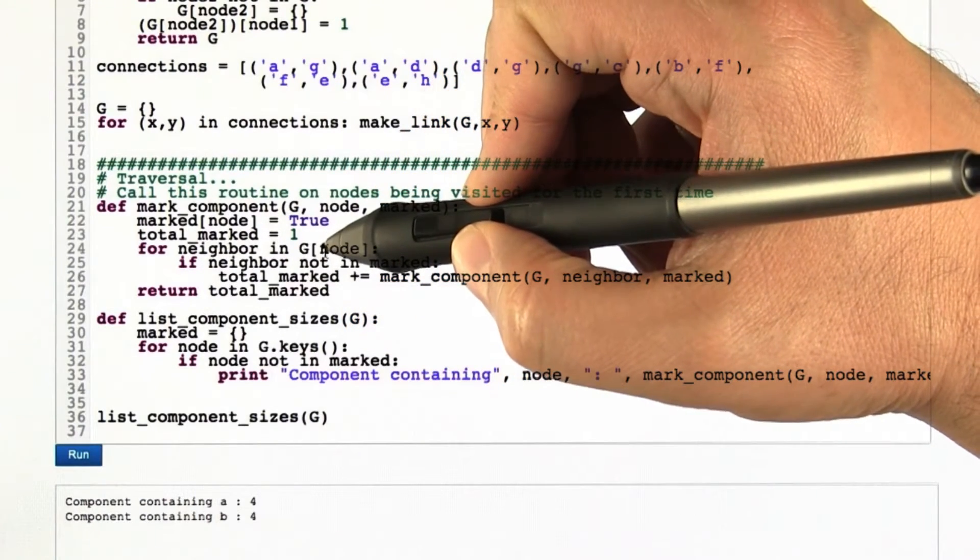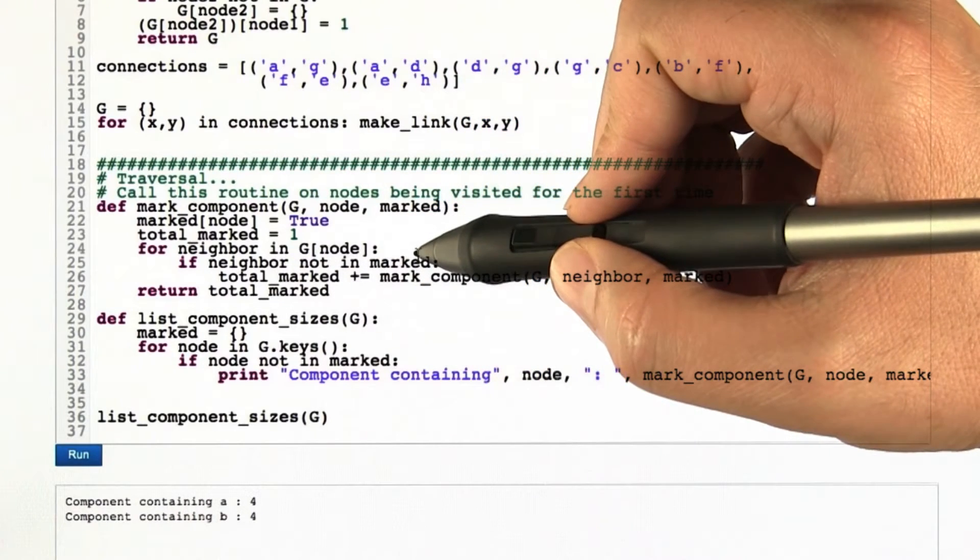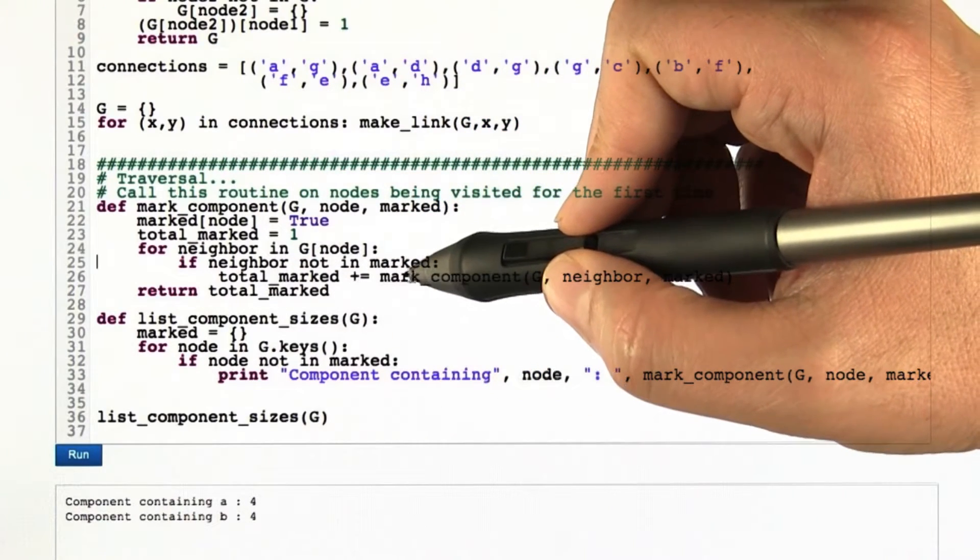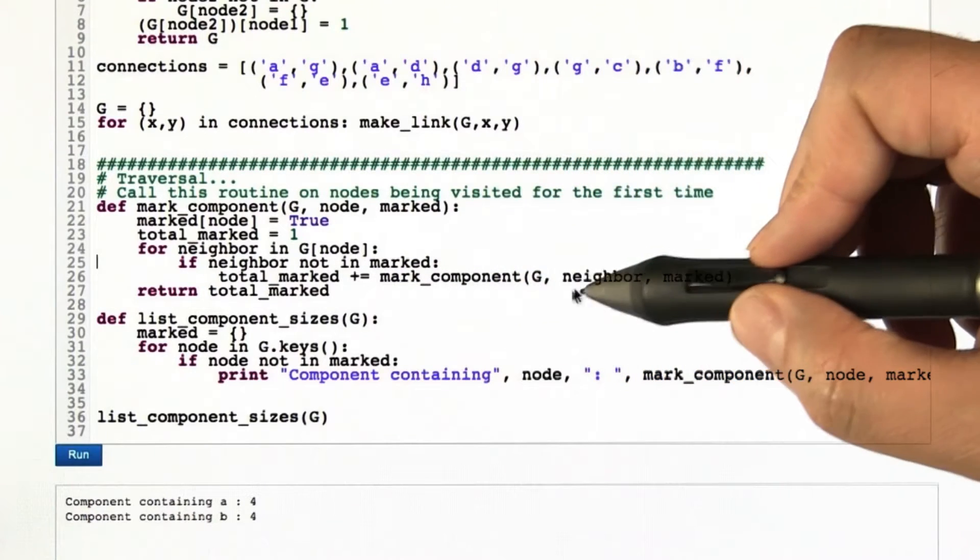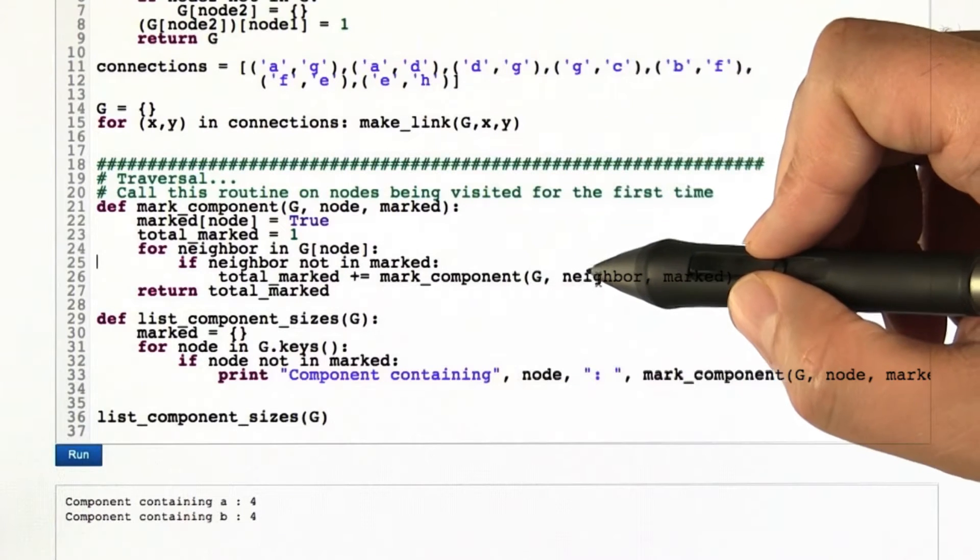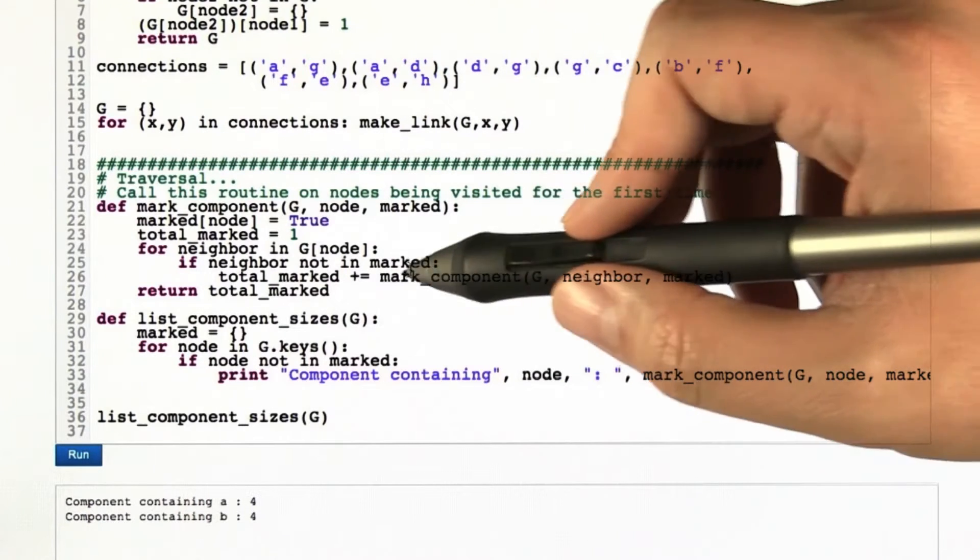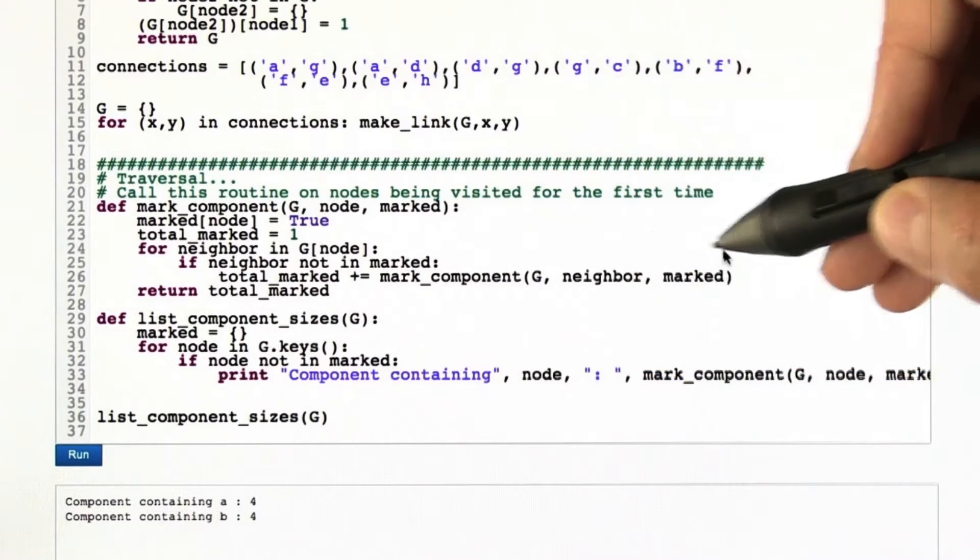Then we look at all the neighbors of that node. And for each of them, if that neighbor of the node that we're looking at hasn't been marked so far, then what we're going to do is recursively call mark_component on that neighbor. It's going to go and get everywhere that it can get to that it hasn't already gotten to, mark them all, and return.